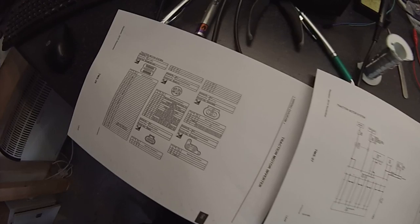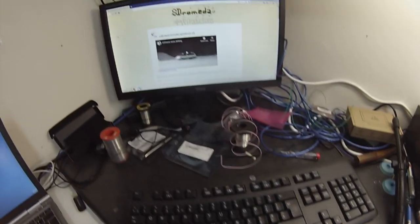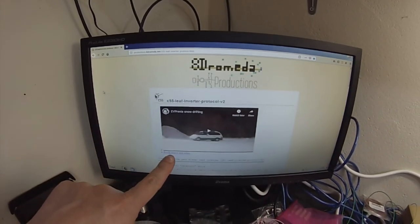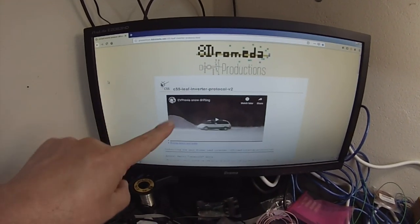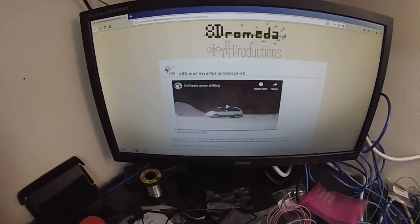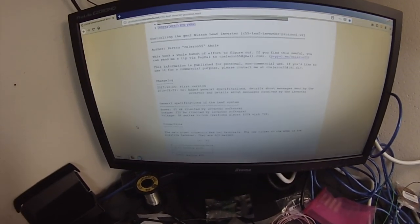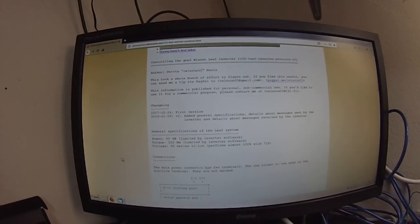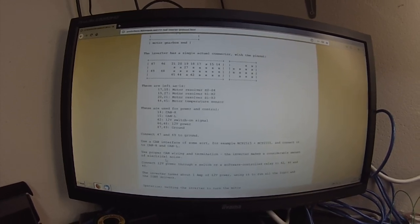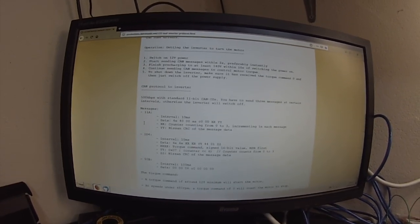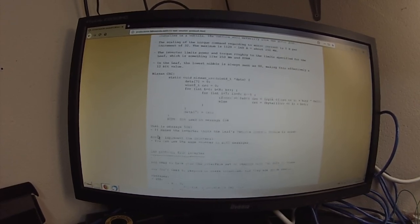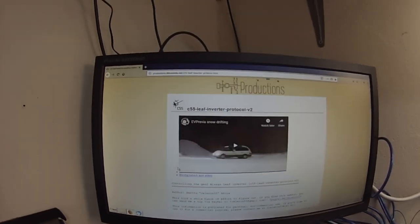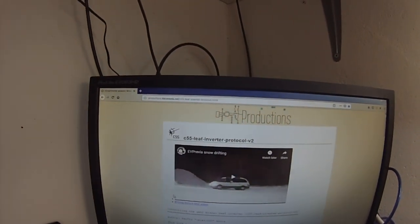And then we're going to go to a website here which I will show you. This website has been posted by a gentleman that has decoded the necessary CAN messages to run the leaf inverter as is. So we've got our connections, we've got our CAN IDs, what the inverter sends, what we need to send to the inverter and so on. I will put a link to that website in the video description.